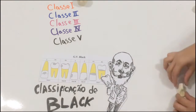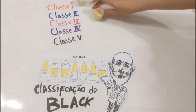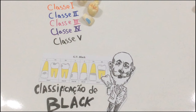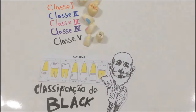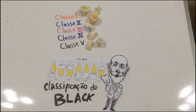Classe 1: localizadas nas faces oclusais de pré-molares e molares. Classe 3: localizadas nas faces proximais de dentes anteriores, sem envolvimento da borda incisai. Classe 4: localizadas nas faces proximais de dentes anteriores, com envolvimento da borda incisai. Classe 5: localizadas no terço cervical das faces vestibular e lingual de todos os dentes.